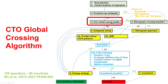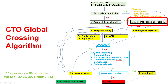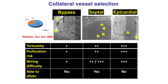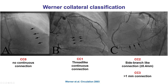Step four is the quality of the distal vessel. The more diffusely diseased the distal vessel, the less likely antegrade approaches will work, making it more important to use the retrograde approach if feasible. Step five is whether there are actually options for retrograde crossing. Retrograde crossing can happen through bypass grafts (patent or occluded), septal collaterals, or epicardial collaterals, each with advantages and disadvantages. Epicardial collaterals are probably the least desirable, having more complexity and more risk of perforation. Also, the larger the collateral — assessed using the Werner classification — the more likely retrograde crossing will be successful.